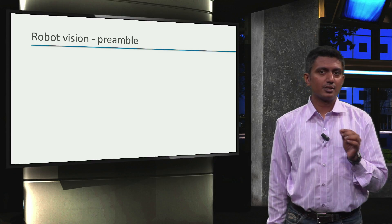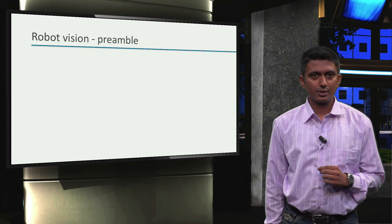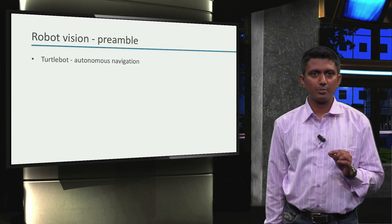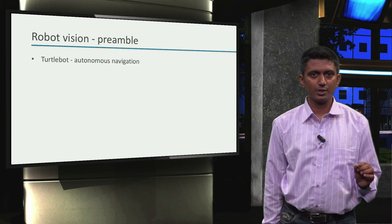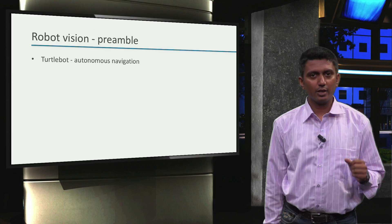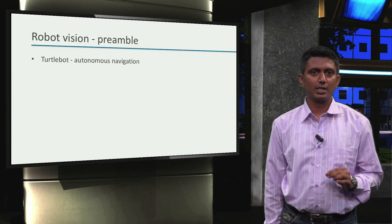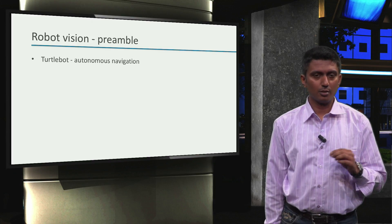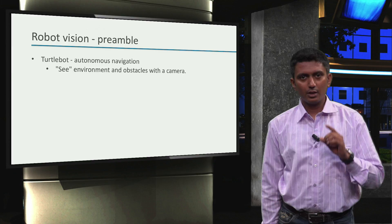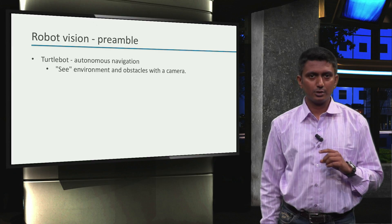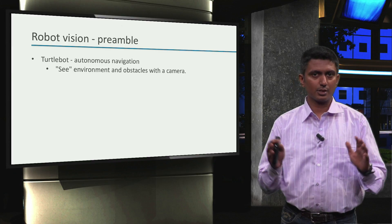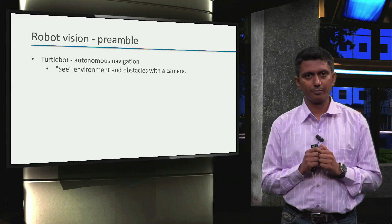Let's set the background first. We already used some principles of robot vision implicitly in week 3, when we autonomously navigated the TurtleBot. Particularly, the camera on the TurtleBot was used to see its environment and obstacles and adapt its movement accordingly.